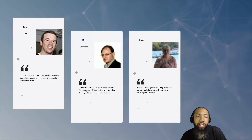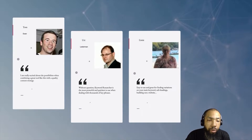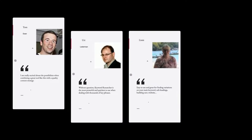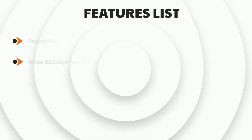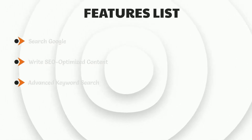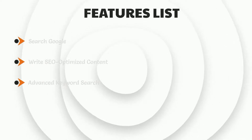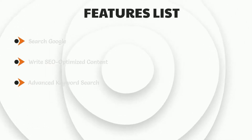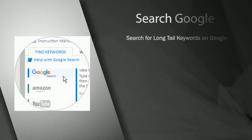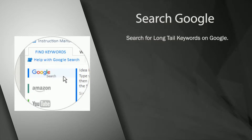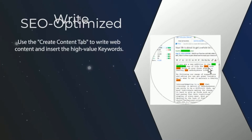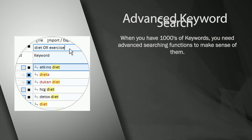Let me share with you all the features you'd get from Keyword Researcher. First, Search Google — search for long tail keywords on Google. Second, Write SEO-optimized content — use the Create Content tab to write web content and insert the high-value keywords. Third, Advanced Keyword Search — when you have thousands of keywords, you need advanced searching functions to make sense of them.